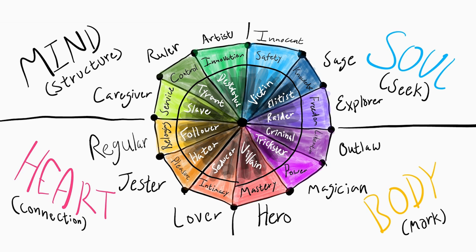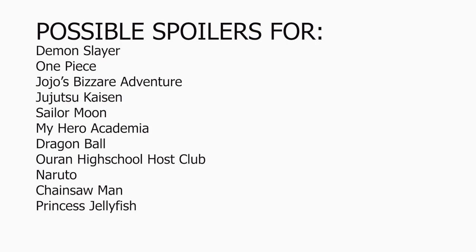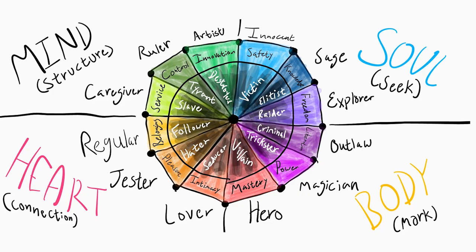This is a diagram of 12 character archetypes that all want fulfillment in a different way. In the soul category, they all seek something. In the body category, they want to leave a mark on the world. In the heart, they want to make connections. And in the mind, they want to build structure. We will be discussing 12 different anime girls, and that might mean we'll talk about some spoilers from each of these series. So you've been warned.